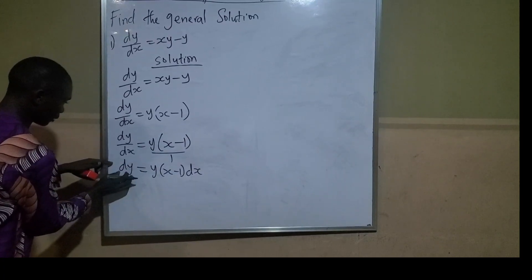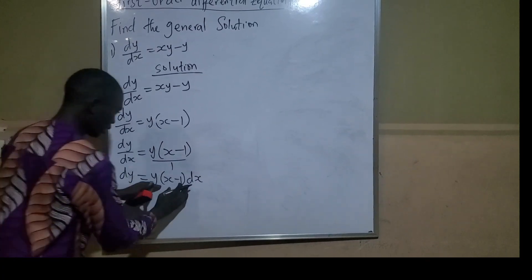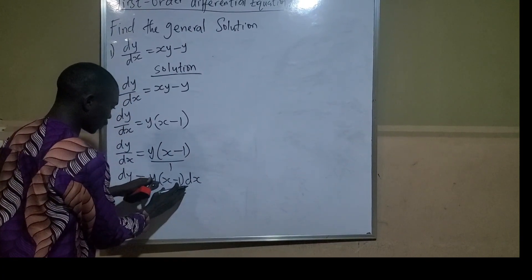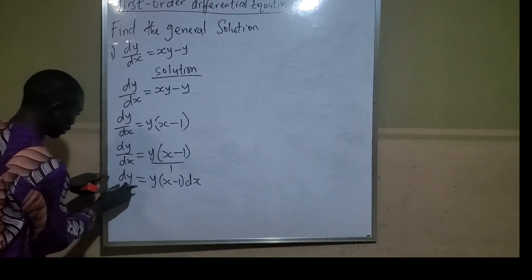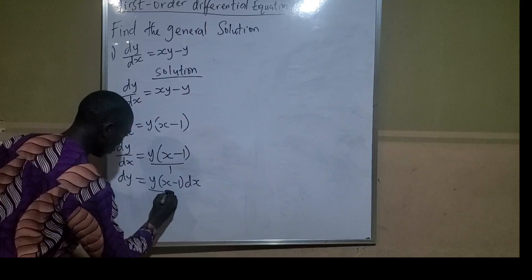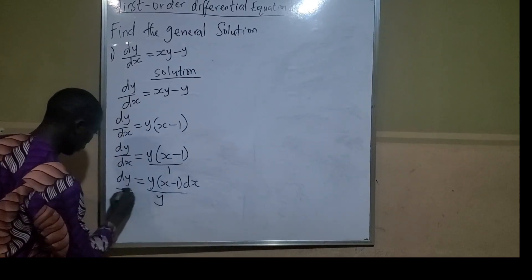I want to bring y to the other side where there is dy, and x to where there is dx. I've successfully brought x where there is dx. Now I want to bring y to where there is dy. What will I do? I will divide by y.